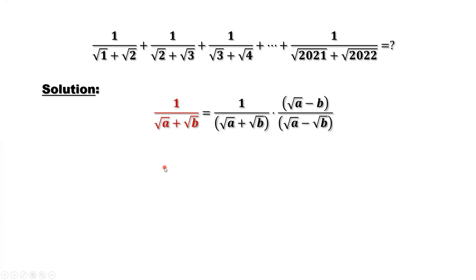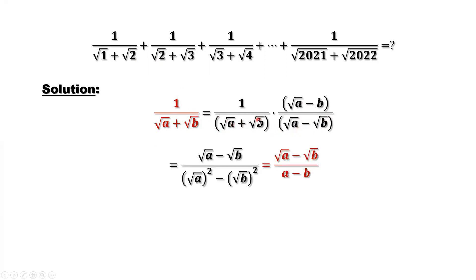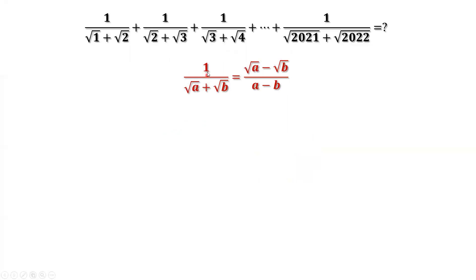Here's the basic result — how to rationalize the denominator. Multiply both numerator and denominator by the conjugate of the denominator, which is square root of a minus square root of b — just change plus to minus. We see that it looks like (x + y)(x - y), so the denominator equals x squared minus y squared. We can cancel the square root and the square, giving us a minus b in the denominator with no square root sign. In the numerator we have square root of a minus square root of b. In summary: 1 over (square root of a plus square root of b) equals (square root of a minus square root of b) divided by (a minus b).